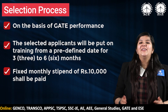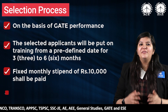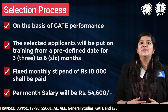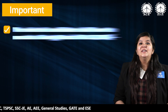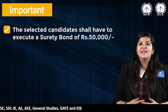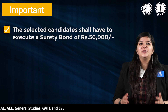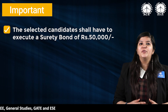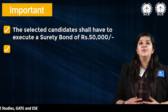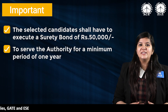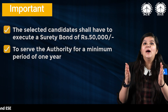Your per month salary is going to be rupees 54,600. There is a surety bond — the selected candidate has to execute a surety bond of rupees 50,000. You have to serve the organization for a minimum of one year.